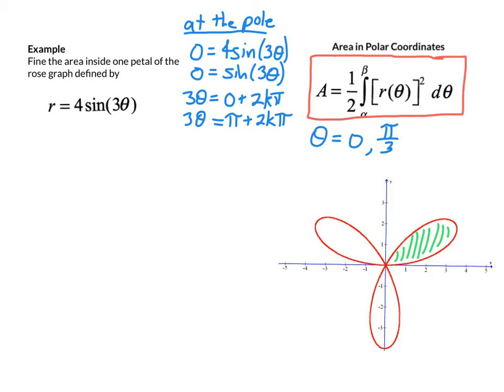So as we do that, we start at 0, we start rotating in a positive direction, counterclockwise direction off the positive x-axis. By the time we get to pi over 3 radians, the graph has gone out around that petal and returned back to the pole. So that's part one of the problem: to figure out, if it's not handed to you, what are the bounds of this integral.